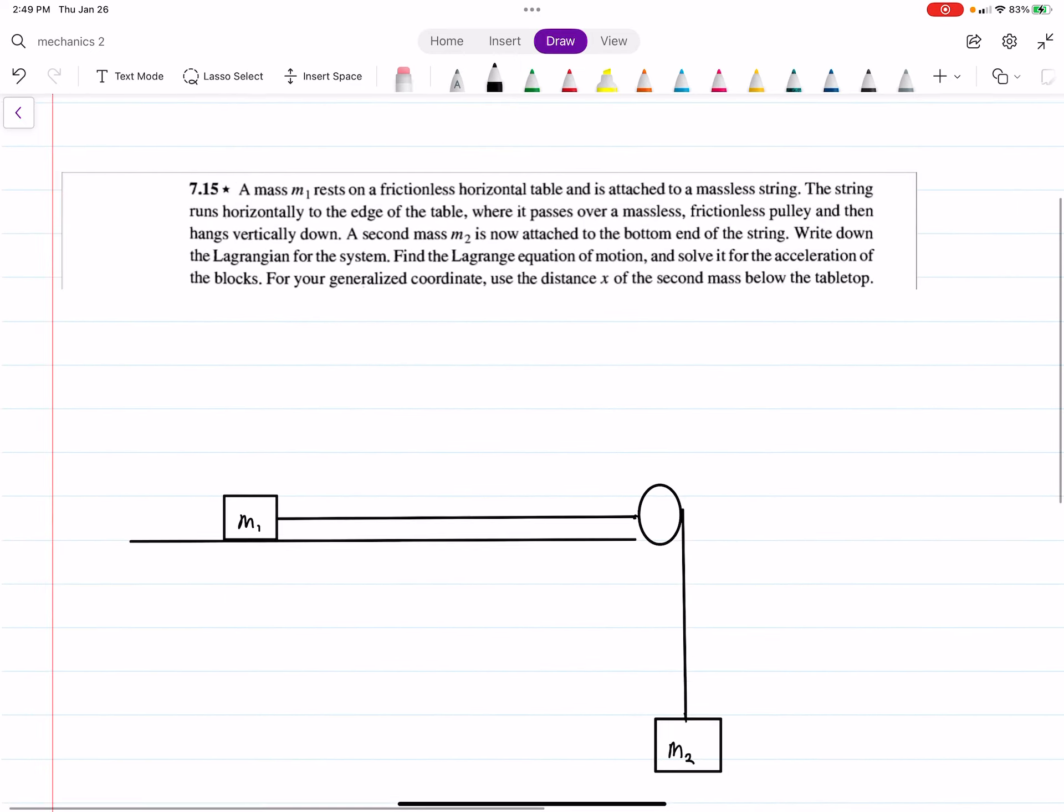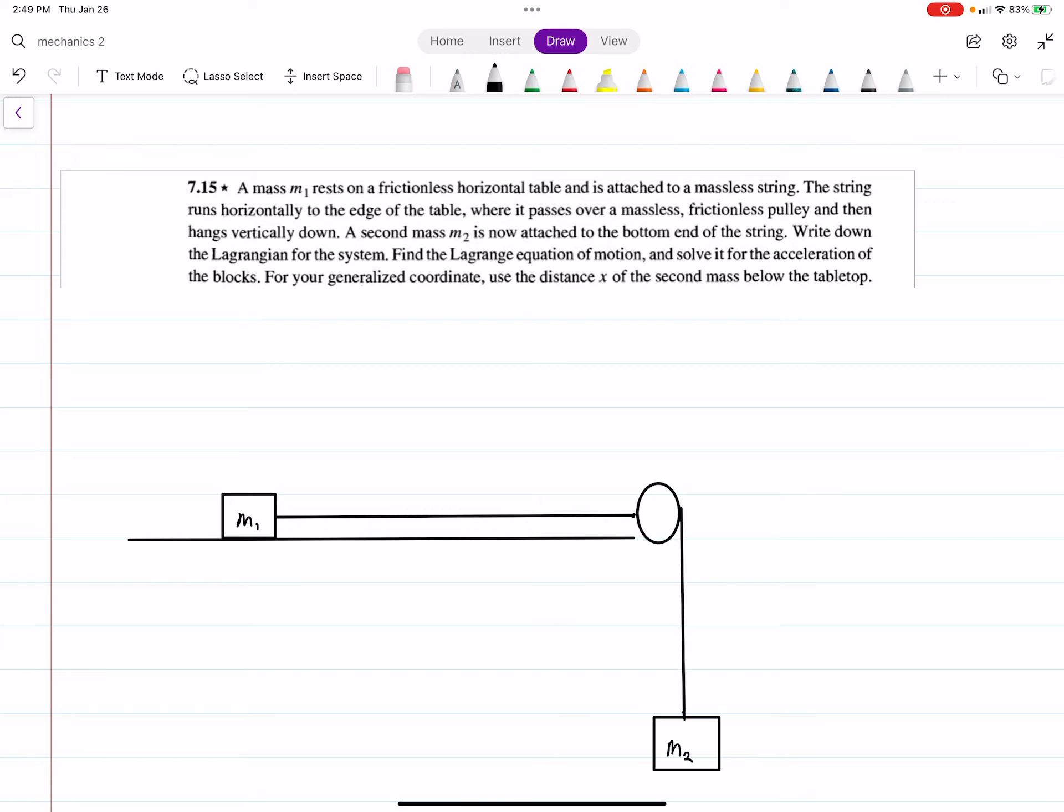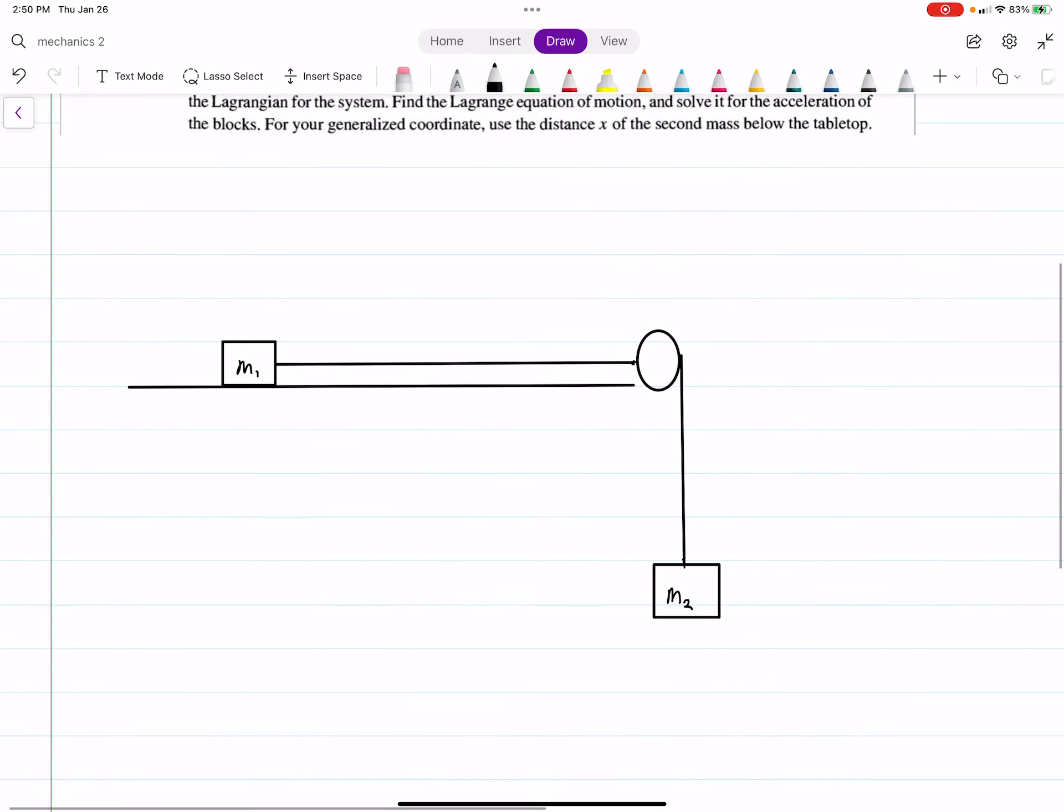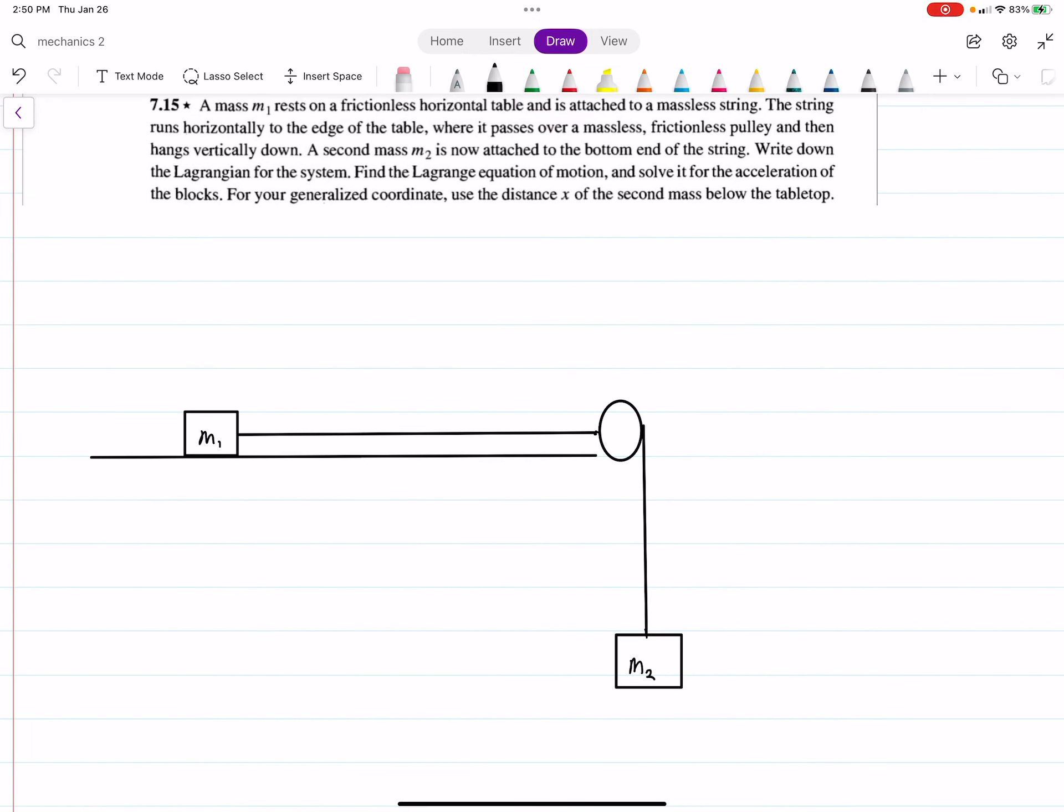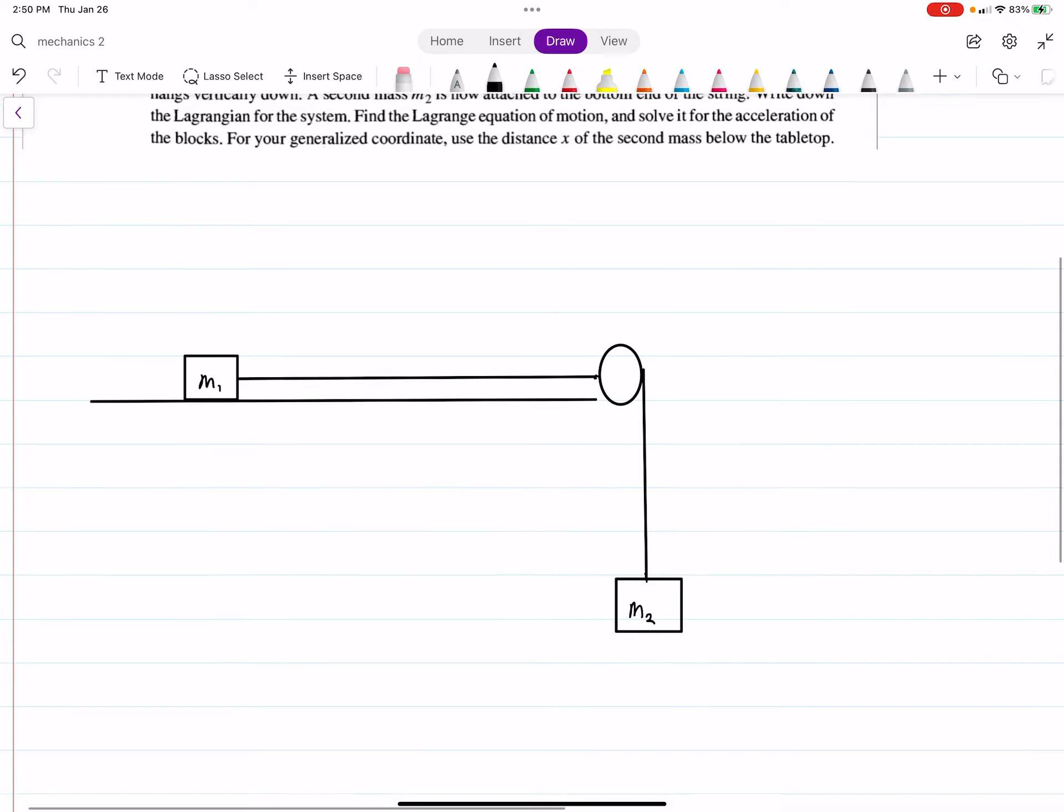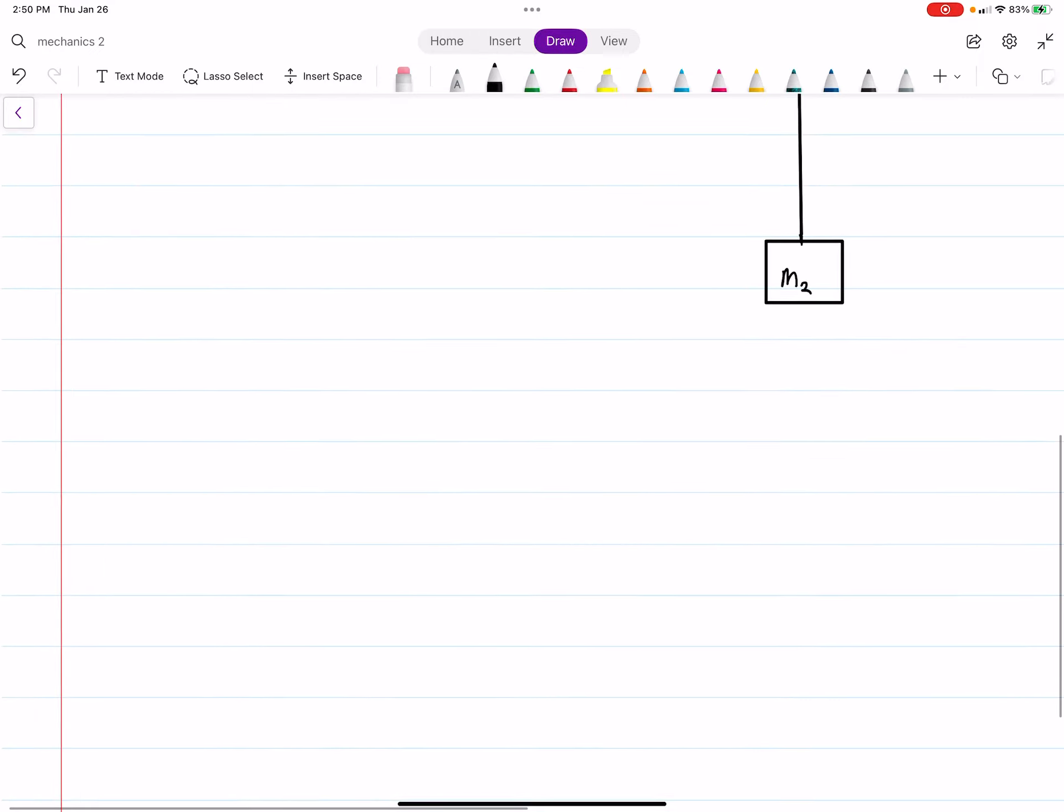Problem 7.15, I drew a picture here, but we essentially have a mass on this frictionless table connected to a string that's attached to this pulley, which then is attached to a mass which is hanging from the table. What we want to do is write down the Lagrangian and find the equations of motion, and the acceleration. So we'll go ahead and get into it.